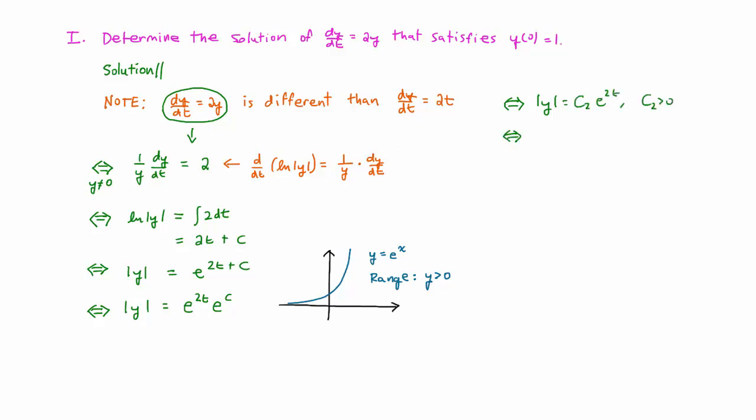Next, we want to isolate y, and we know that if the absolute value of y equals c2 e to the 2t, then y equals plus or minus c2 e to the 2t, which tells us that the constant in front of e to the 2t could actually be positive or negative.